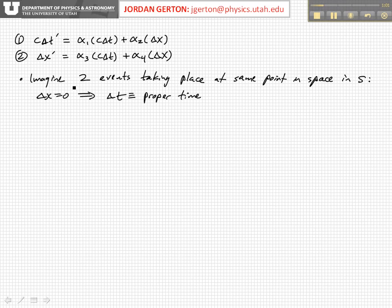Now if we imagine that we have two events that take place at the same point in space in the unprimed frame S, that means that delta X equals zero, and that is the definition of the proper time. So the time interval between those two events that take place at the same point in space is the proper time.